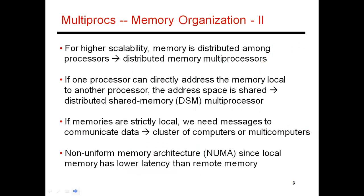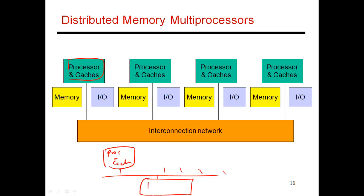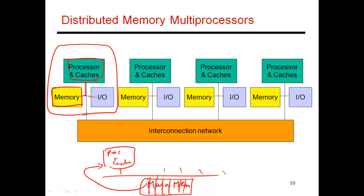The other alternative, considered to be the more scalable approach, is called the distributed memory multiprocessor. Again, I have a processor and private caches. Previously, many of these were hooked up to a single shared bus with main memory sitting as one monolithic unit. Now I'm taking that main memory and splitting it into multiple pieces, with one piece associated directly with each processor and cache. Each processor node also has some I/O units like a disk. So each of these is a self-contained processor node - it could be one single server or one single blade on a rack.